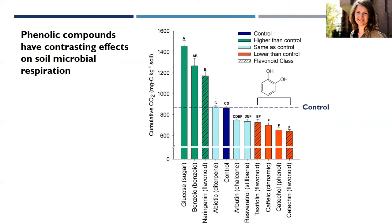An additional interesting finding was that the biosynthetic class a compound belongs to does not determine whether it will have a positive, negative, or no effect on respiration. For example, there are three flavonoid compounds: naringenin increases respiration while taxifolin and catechin decrease it. However, the compounds that suppressed respiration all shared the same functional group — a catechol group — suggesting that functional group may be more important than biosynthetic class in determining a compound's effect on soil microbial respiration.